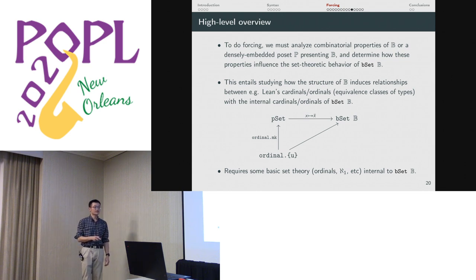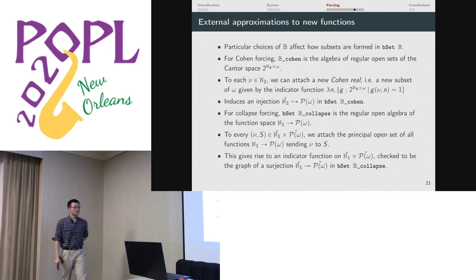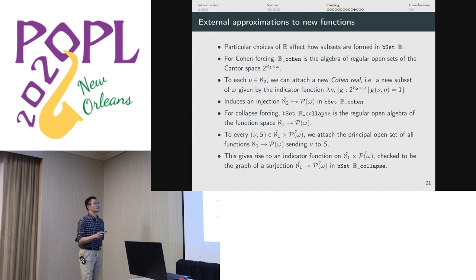Furthermore, we had to redevelop basic set theory, but completely internal to B set B. We had to talk about the theory of ordinals, we had to construct aleph one, but internally inside of that model of set theory. The two algebras that we used to form the forcing extensions are given here. For Cohen forcing, we used an algebra of regular open sets in a Cantor space. Since you form subsets by giving an indicator function to the Boolean algebra, then by our very choice of the Boolean algebra, we can give the graph of an injection from aleph two into the power set of omega. Similarly to force CH, we can take an algebra of the function space of aleph one to the power set of omega. We can similarly, simply by construction, find an indicator function, which represents a surjection from aleph one onto the power set of omega.